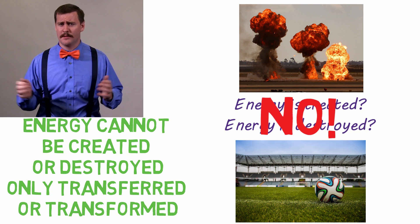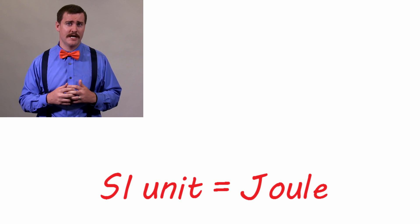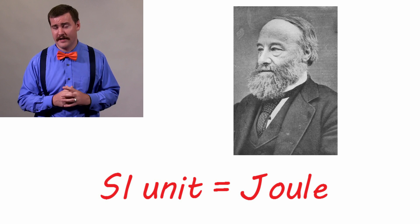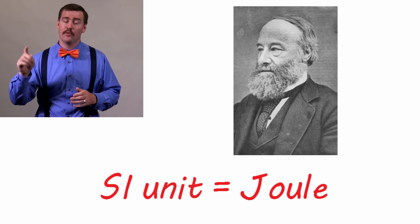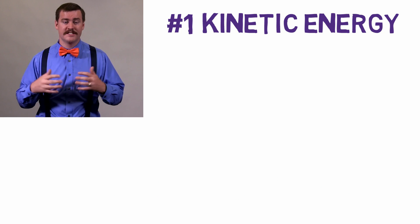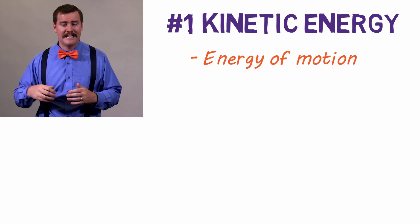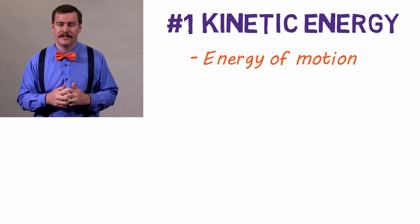Let's talk a little bit more about energy. The SI unit for energy is the Joule, named after James Prescott Joule, and there are different forms of energy. I'm going to talk about five. Number one is kinetic energy, probably the energy you're most familiar with. This is the energy of motion, so any object moving through space has kinetic energy.